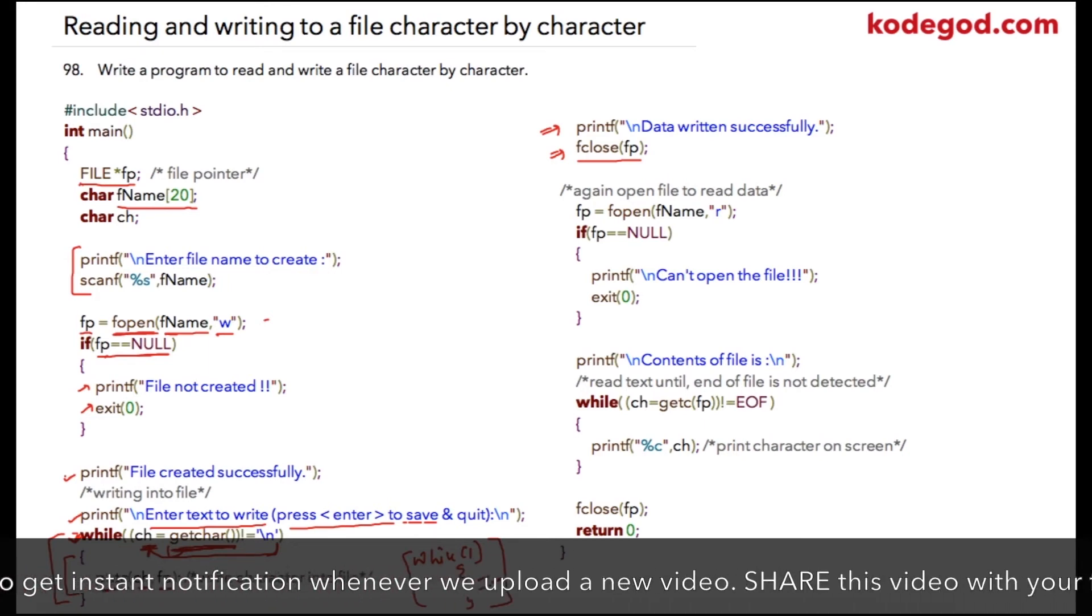Now that we have written data successfully to a file let us try to open the same file and try to read the content and let us try to print it on the output screen. So again I'm using fp and I'm going to use fopen to open that file in read mode this time. If fp is equal to null that means file did not exist so we can print that cannot open the file and we can exit the program.